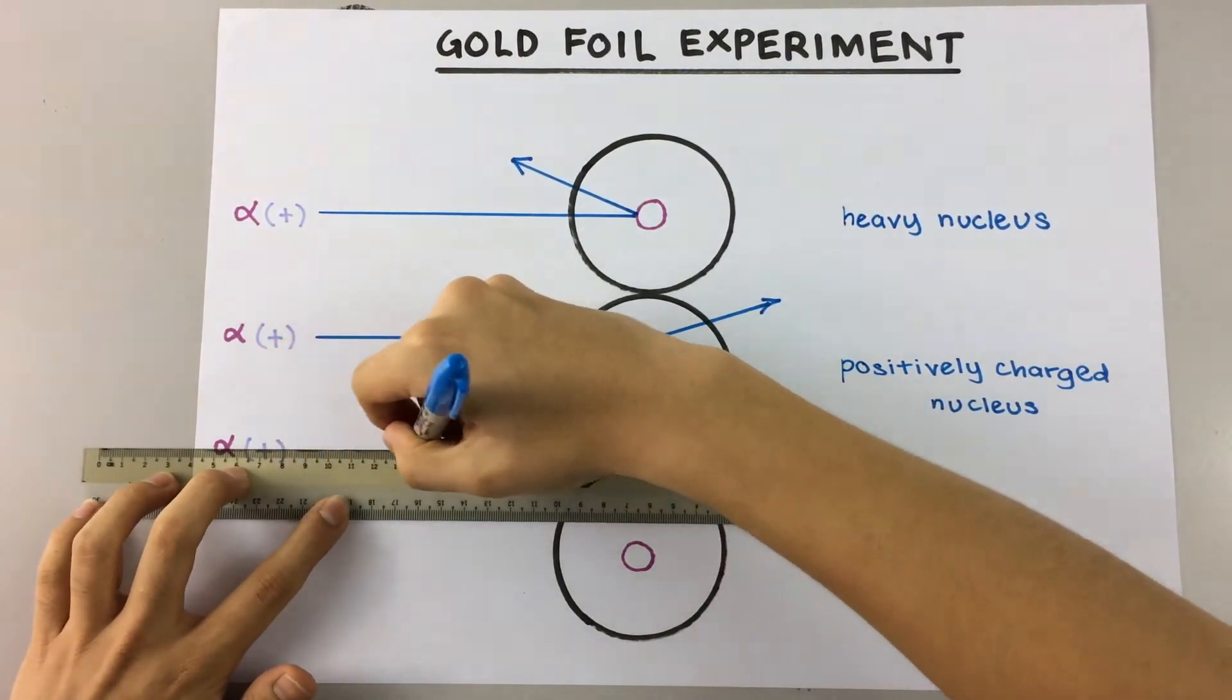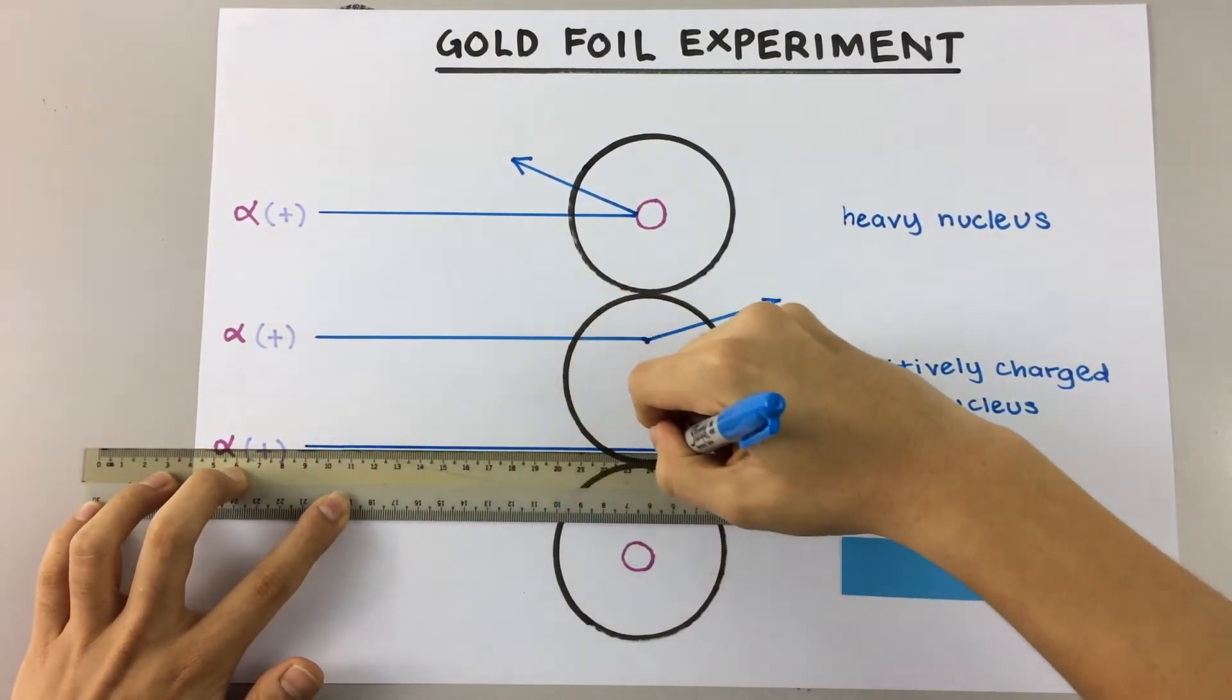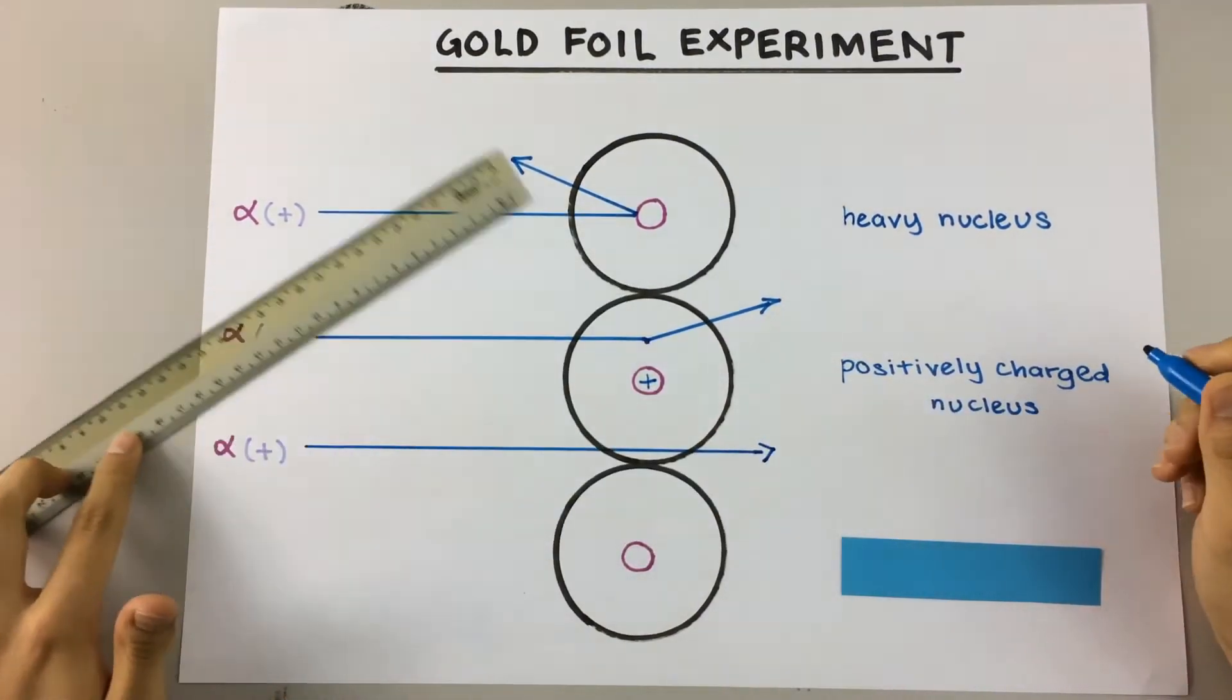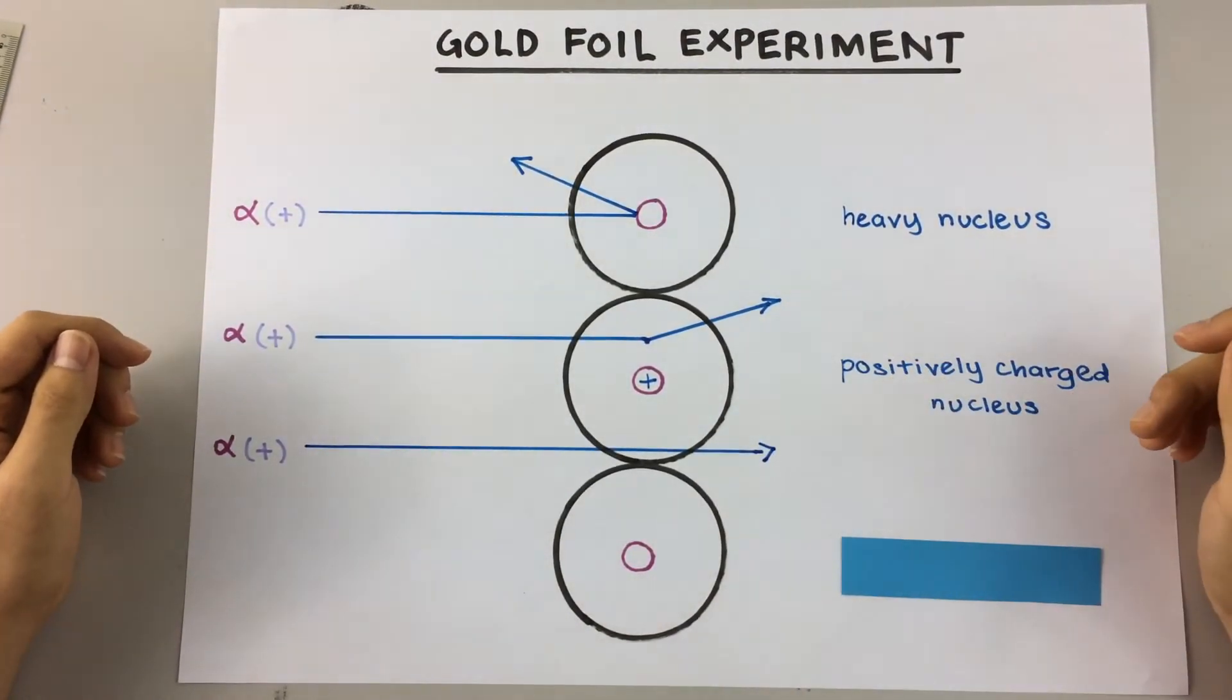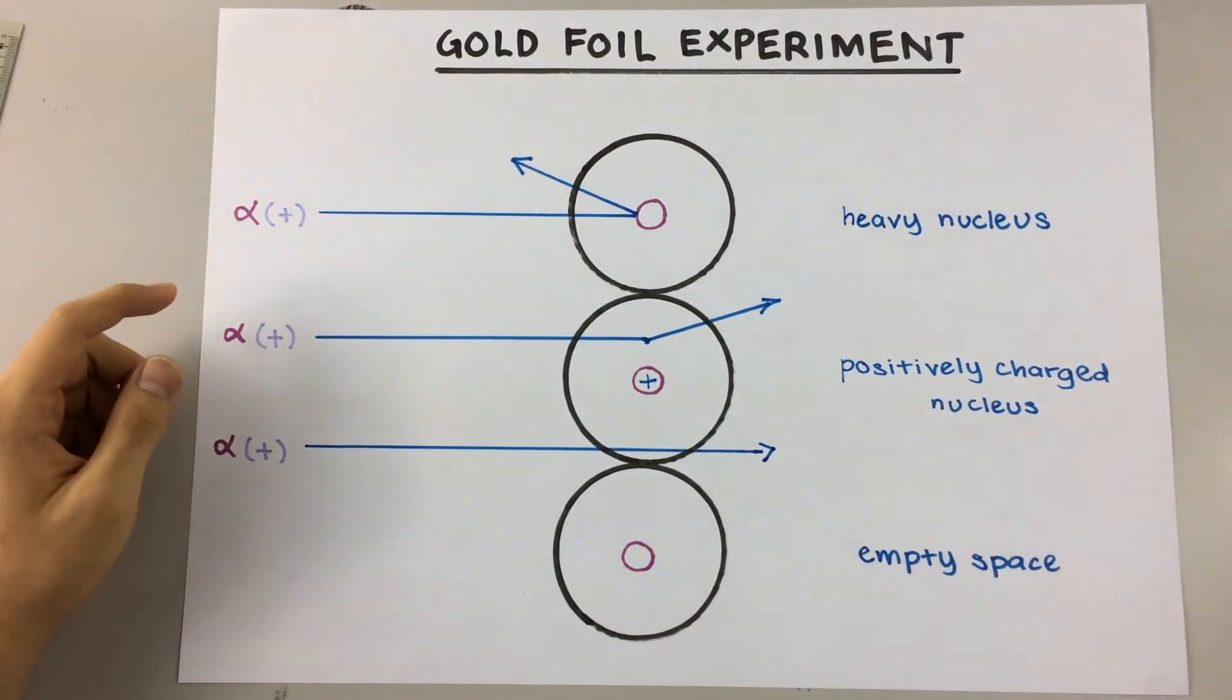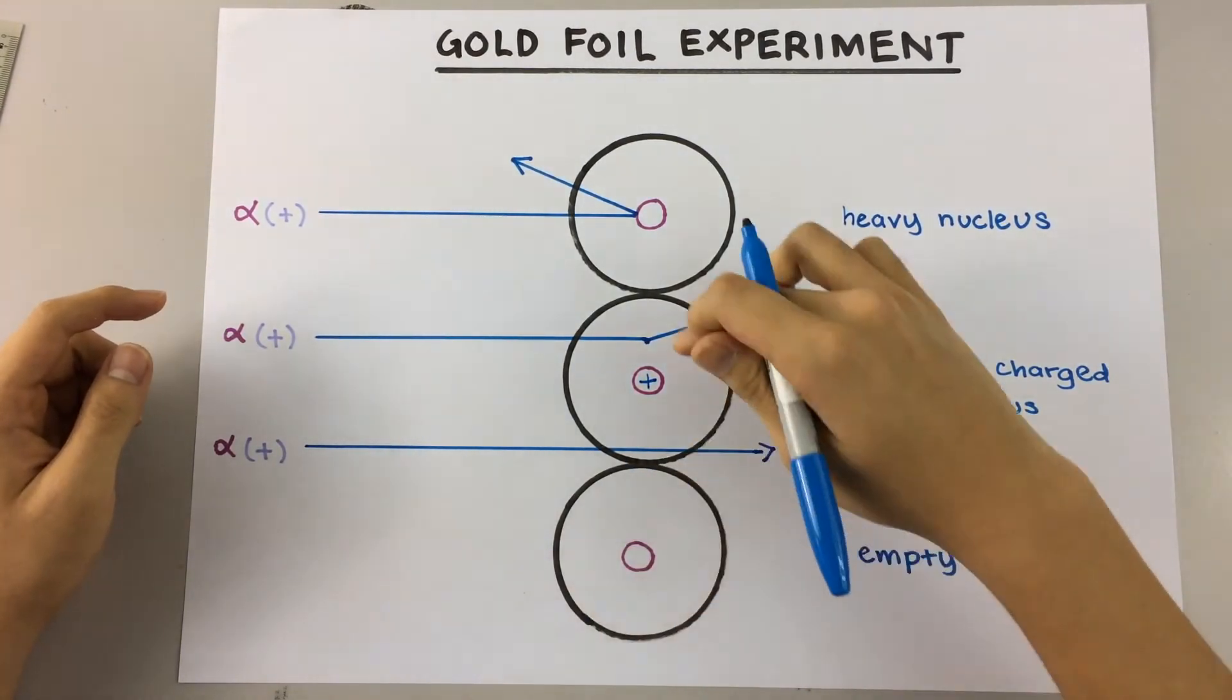Finally, the last observation is that majority of the alpha particles pass straight through the gold foil without any deflection. And this proves that the atom is mainly made up of empty space.